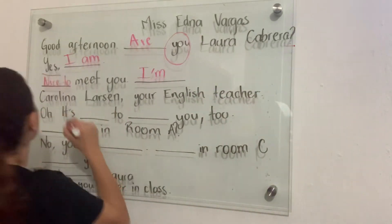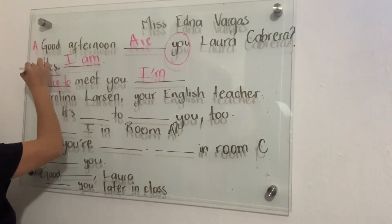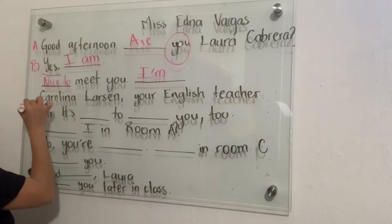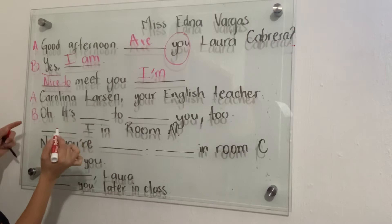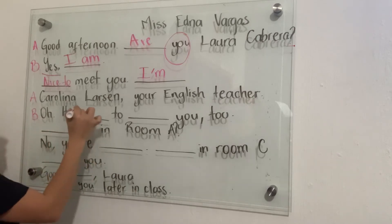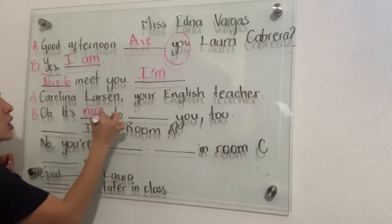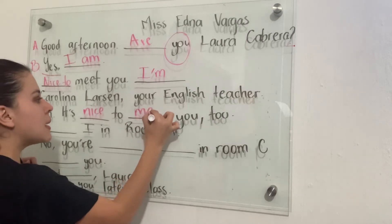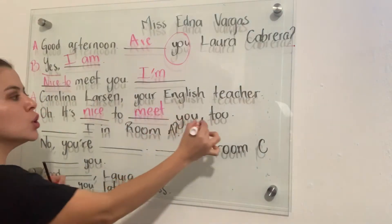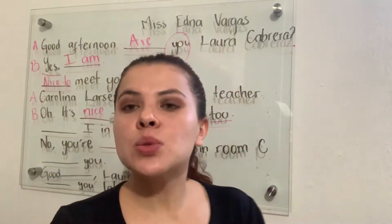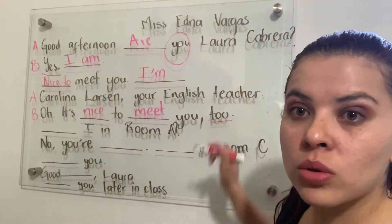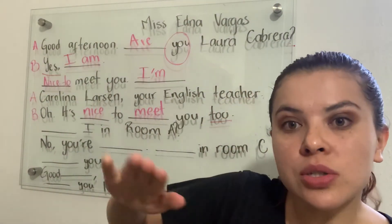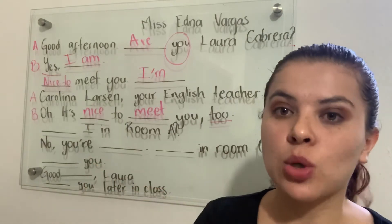Person B is going to say 'It's nice to meet you too.' As we can see here, we have a double-O in 'too' and it has a slightly longer sound: 'too.'